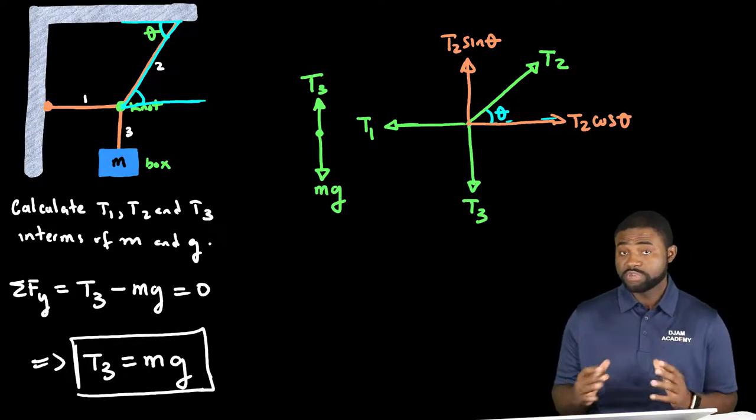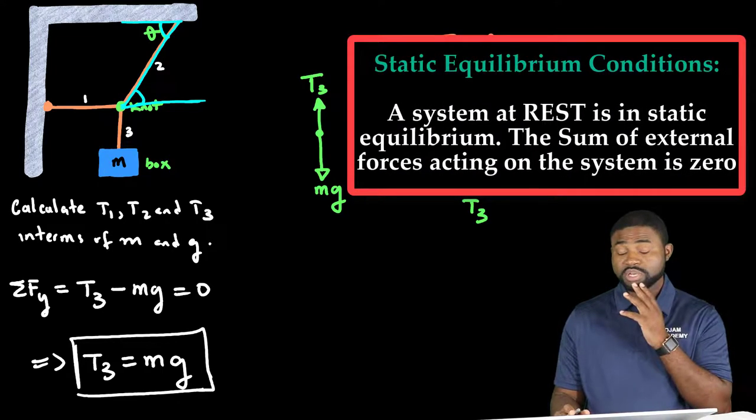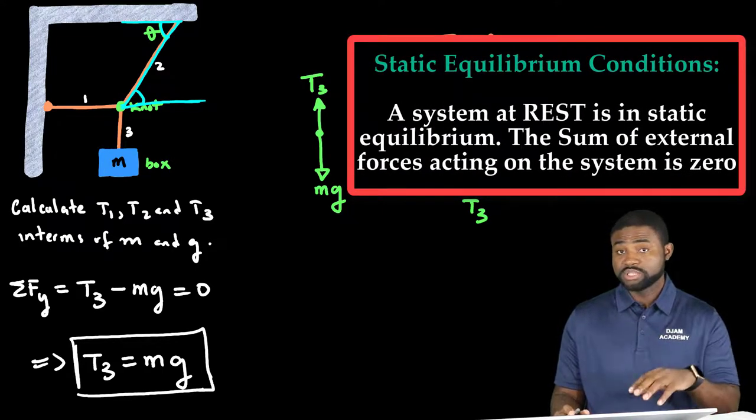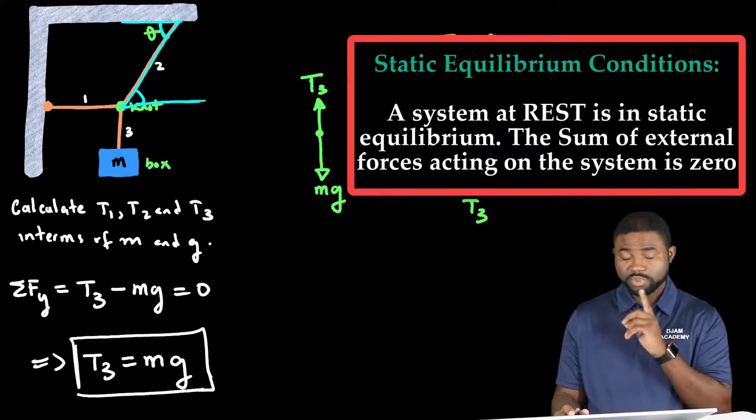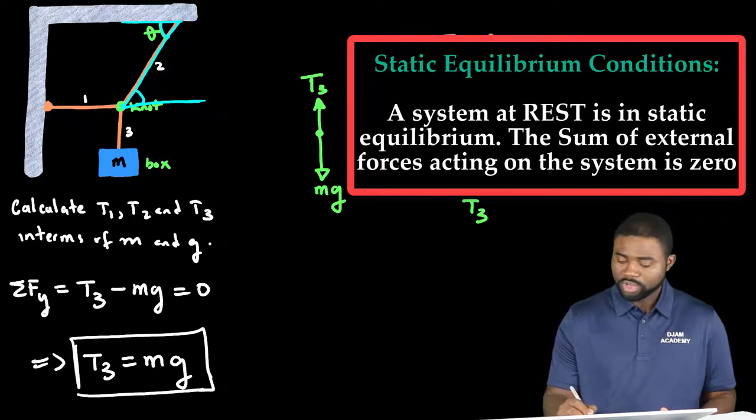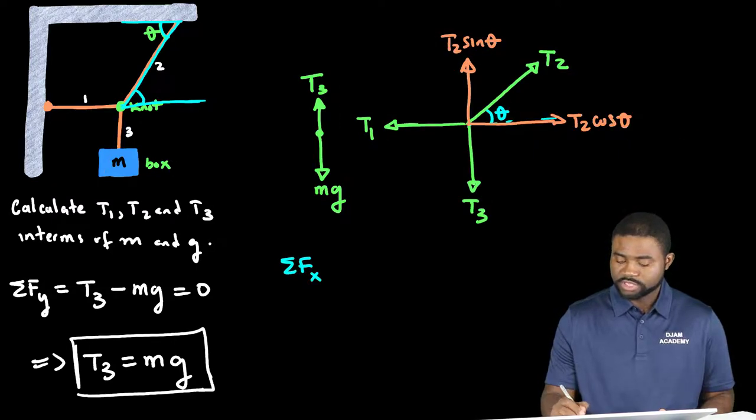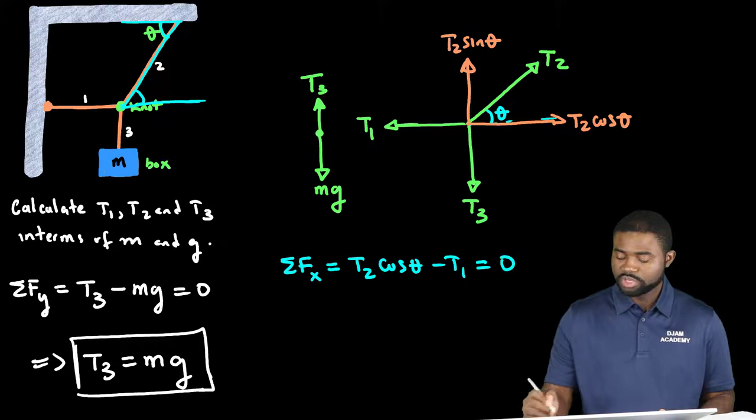Remember, we are dealing with a system in equilibrium because the system is at rest. The importance of that statement is the sum of forces in any direction must be equal to zero. And that would greatly help. So let's go to the knot. We know that the sum of forces along the x direction would mean that T2 cosine theta minus T1, all of this will be equal to zero.